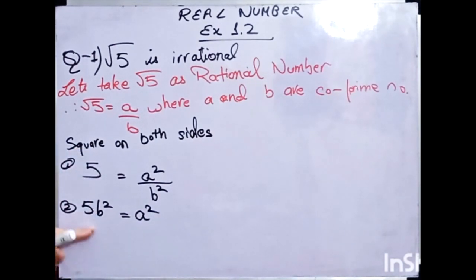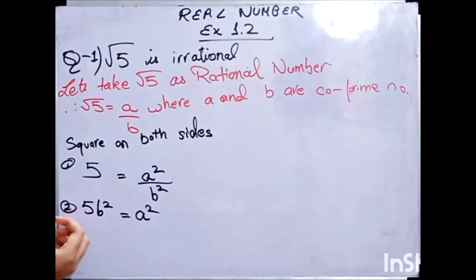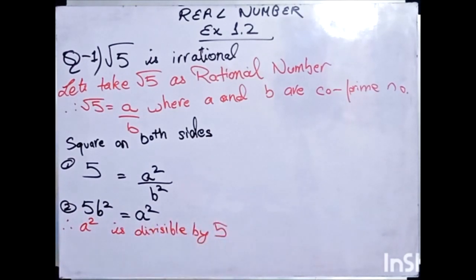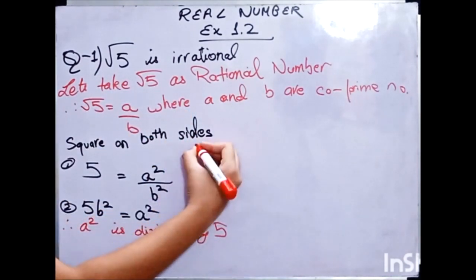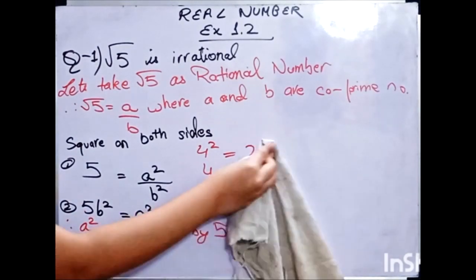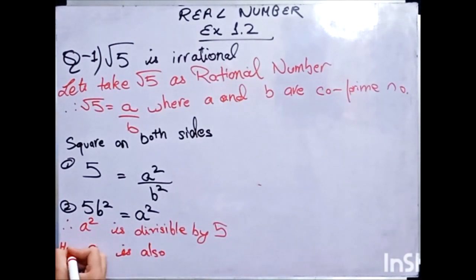Now, what does this mean? This means that A squared is divisible by 5. Like I said, if 4 squared is divisible by 2, then 4 is also divisible by 2. So according to our theorem, A squared is divisible by 5, hence A is also divisible by 5.